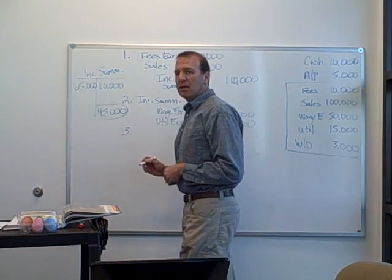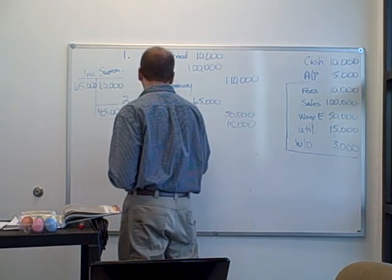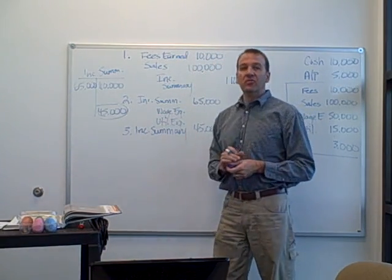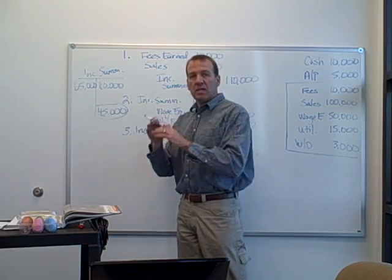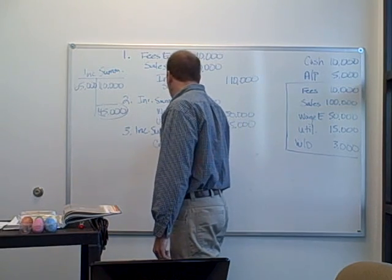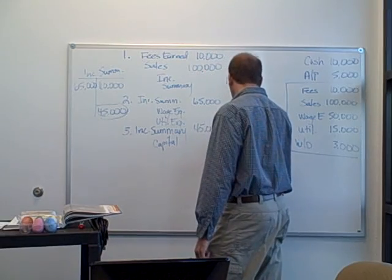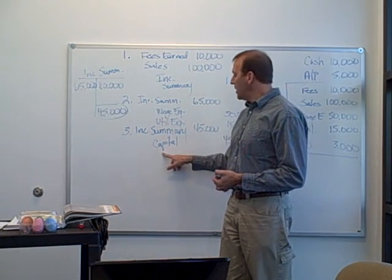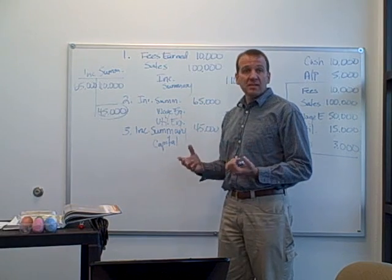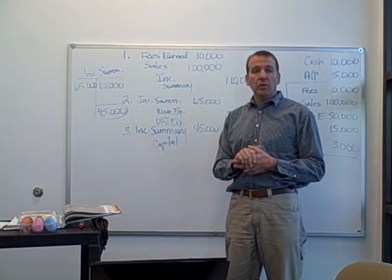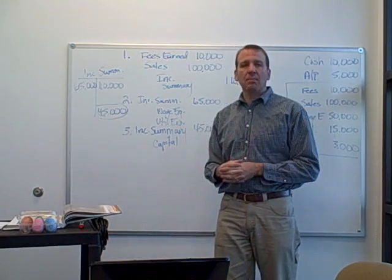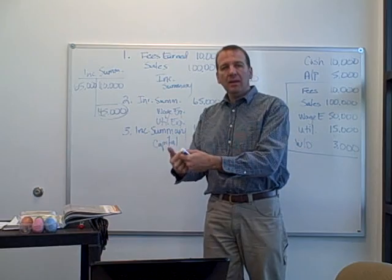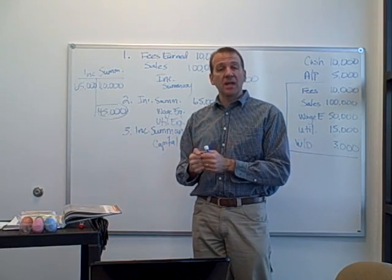That's the third step — we have to close out income summary. To close it out, we'll put a $45,000 debit, which zeros out the $45,000 in income summary. We're going to put it into the capital account because the owner owns that net income — the owner owns the profit of the company. That's exactly what the statement of owner's equity does: we put net income into the capital account. That's what this whole closing process is doing — putting that net income into the capital account, just like we've already done in the statement of owner's equity.